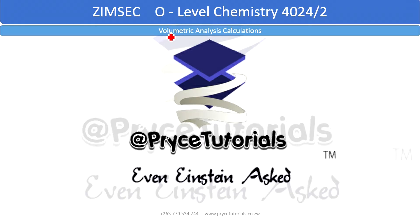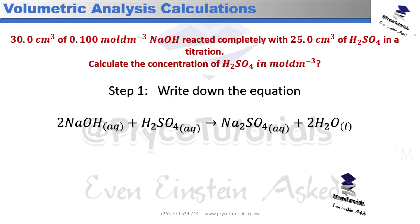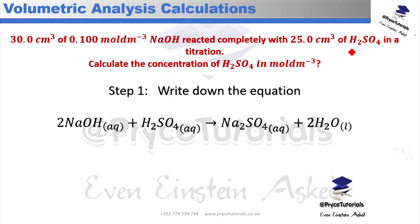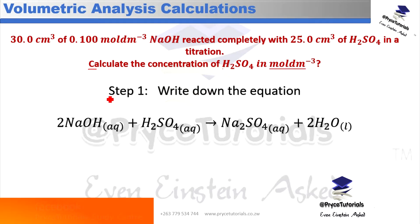Let's look at this volumetric analysis question. 30 cubic centimeters of 0.1 mol per dm³ sodium hydroxide reacted completely with 25 cubic centimeters of sulfuric acid, H₂SO₄. We are asked to calculate the concentration of H₂SO₄, and this concentration is wanted in mol/dm³.